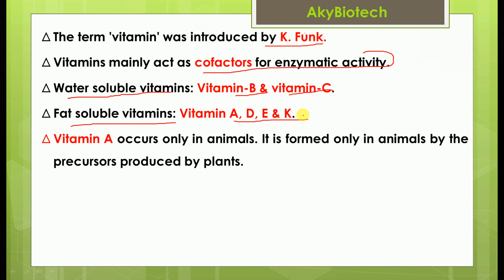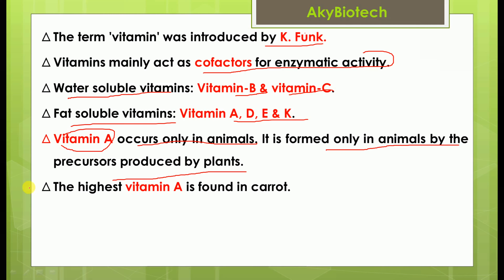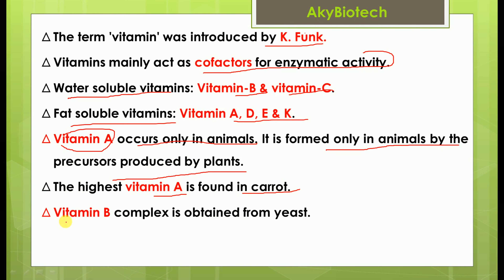Vitamin A occurs only in animals — note this carefully. It is formed only in animals from a precursor produced by plants. The highest source of vitamin A is found in carrot. Vitamin B complex is obtained from yeast.